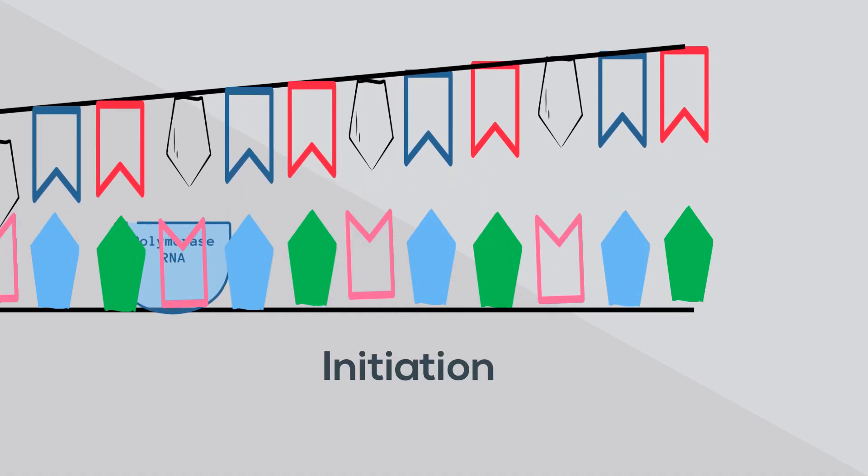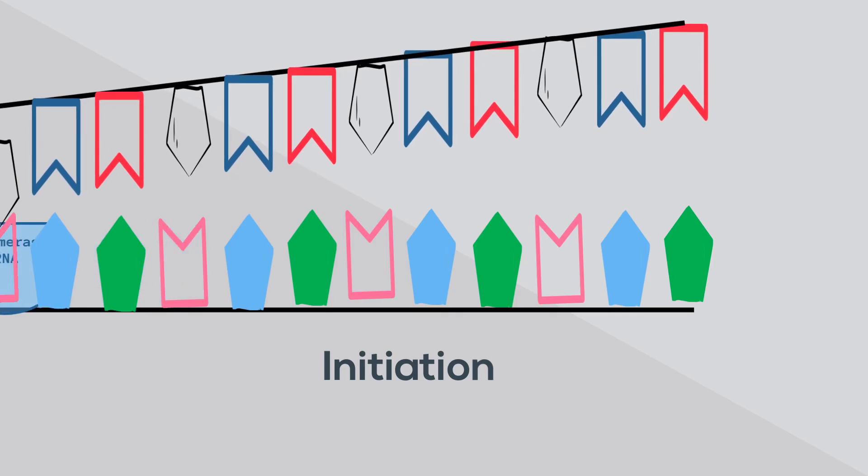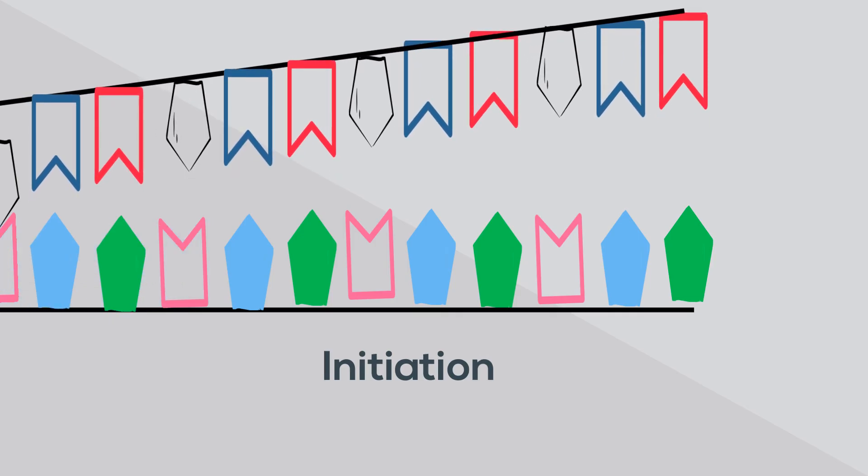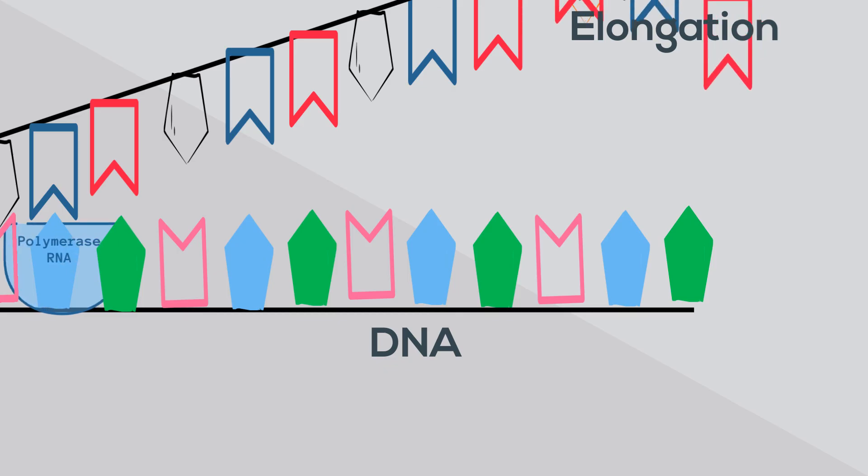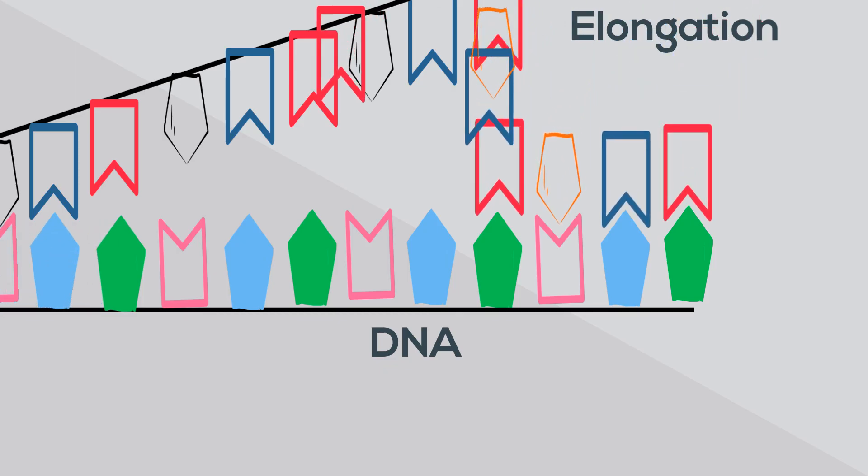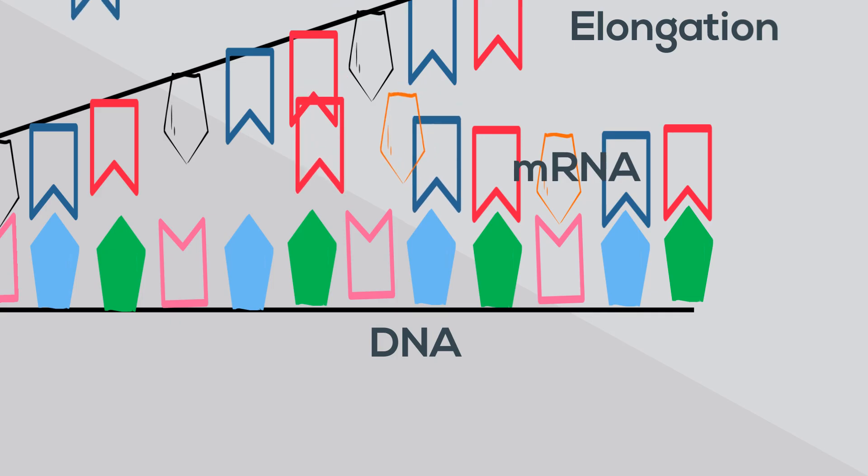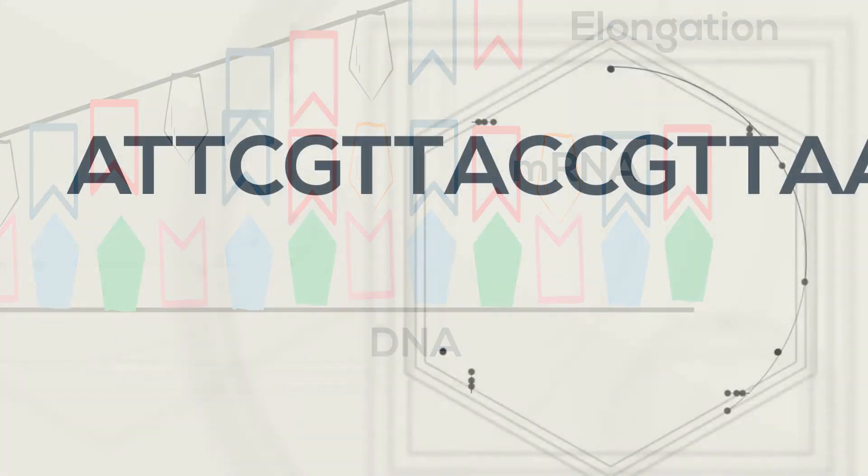As the RNA polymerase moves along the unzipped DNA, bases of RNA attach to the DNA. This stage is called elongation. RNA is similar to DNA but does not contain thymine but instead contains uracil.